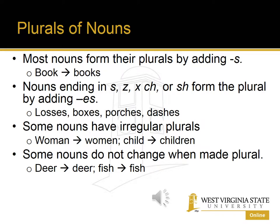Most nouns in English form their plurals by simply adding S. For example, book becomes books. Some nouns that end in S, Z, X, C-H, or S-H form the plural by adding E-S, because the singular noun is already ending in an S sound.